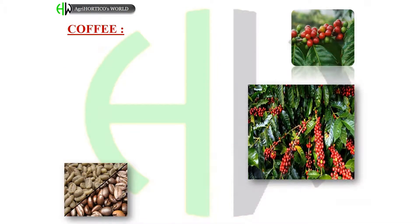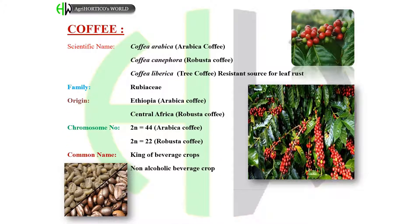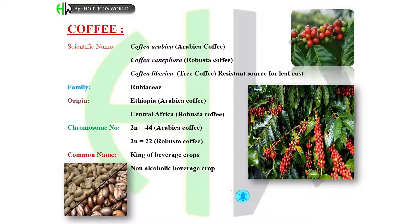Coffee: scientific names — Coffea arabica (arabica coffee), Coffea canephora (robusta coffee), Coffea liberica (tree coffee, resistant to leaf rust). Family: Rubiaceae. Origin: Ethiopia for arabica coffee; Central Africa for robusta coffee. Chromosome number: 2n = 44 for arabica; 2n = 22 for robusta. Common names: King of beverage crops and non-alcoholic beverage crop.